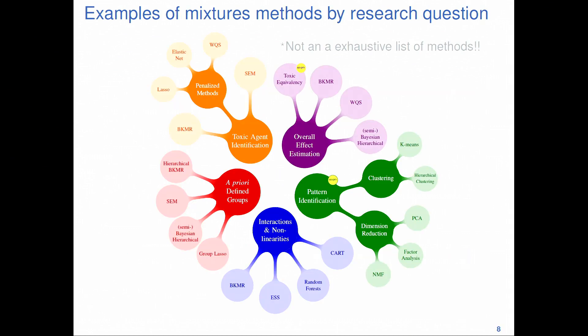These are some examples of mixture methods that have already been used, classified by research question rather than by what they are doing. The important thing is not to enumerate all these methods, but to recognize that we have already been using machine learning methods in environmental health research — PCA, clustering, and more recently regression trees. We are already starting to use these methods and increasingly keeping up to date with more advanced machine learning approaches.